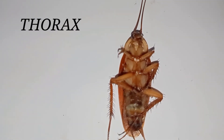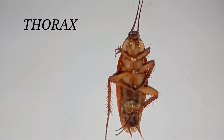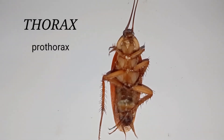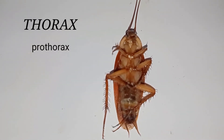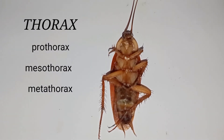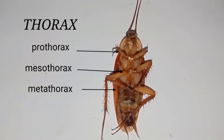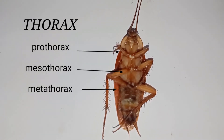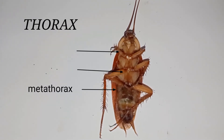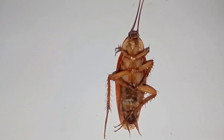The thorax of cockroaches consists of three parts: the prothorax, mesothorax, and metathorax. The head is connected with the thorax by a short extension of the prothorax, known as the neck.